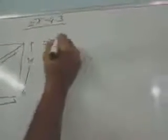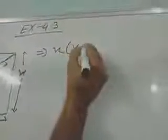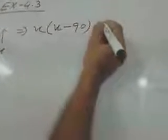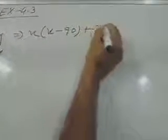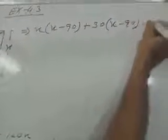Or, out of first two terms, you take the common x, then it will be x minus 90 plus 30, you take common, then x minus 90 is equal to 0.